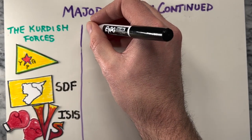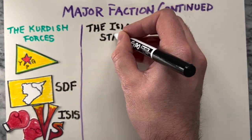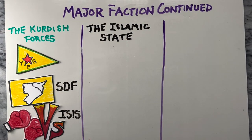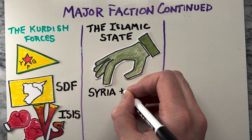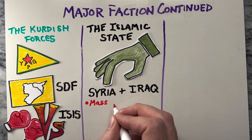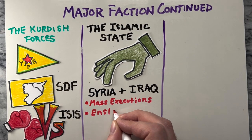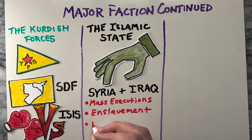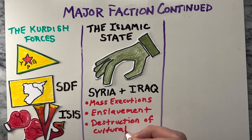Then there's the Islamic State ISIS, a jihadist group that emerged from the chaos of the Syrian Civil War and seized control of large parts of Syria and Iraq. ISIS is responsible for numerous atrocities, including mass executions, enslavement, and the destruction of cultural heritage sites.